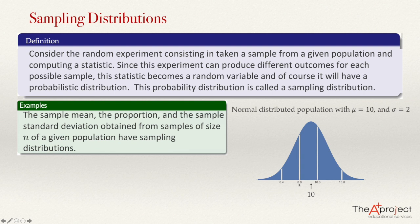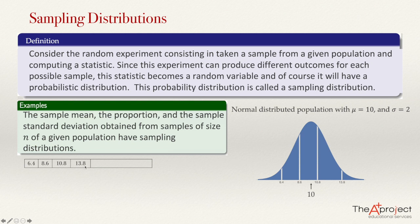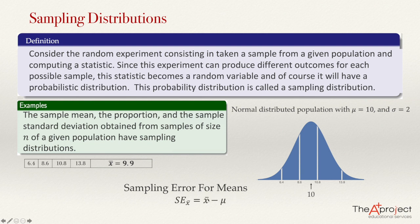Let's take a sample of size 4. From this population I get the numbers 6.4, 8.6, 10.8, and 13.8. I will be starting speaking about the sampling distribution of the mean. So you need to get the mean of these four numbers — add them together and divide by 4 — and you get a mean of 9.9. The population mean is 10, but the sample mean is 9.9. The sample mean is not necessarily equal to the population mean. The sampling error for the means will be the sample mean minus the population mean, so in this case the sampling error is 9.9 minus 10, equal to negative 0.1.